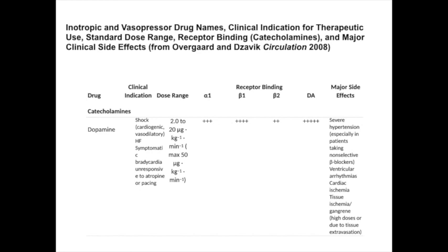Going through the list of commonly used inotropic agents, dopamine is of particular value in circumstances of cardiogenic shock, in heart failure, and also in symptomatic bradycardia that has been unresponsive to atropine. Dopamine, given typically between 2 and 20 micrograms per kilogram per minute, acts upon dopaminergic receptors. It acts to a significant extent on beta-1 receptors, and it also will act on alpha-1 receptors. The major side effects of its use include severe hypertension, particularly in patients who are already taking non-selective beta blockers. There is a risk of ventricular arrhythmia, cardiac ischaemia, and tissue ischaemia.